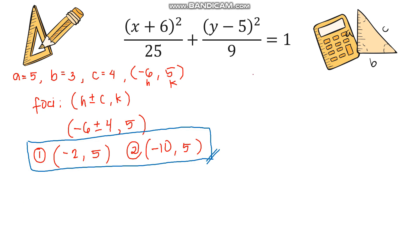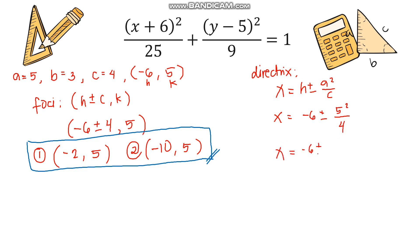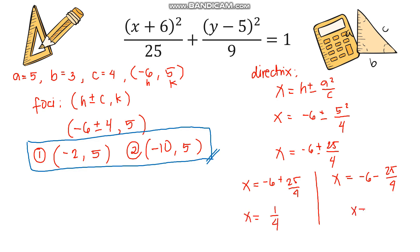Last, we identify the directrices. Since the ellipse is horizontal the formula is x = h ± a² / c. So x = −6 ± 25 / 4. This gives us x = −6 + 25/4 = 1/4, and x = −6 − 25/4 = −49/4. These two are the equations of our directrices.